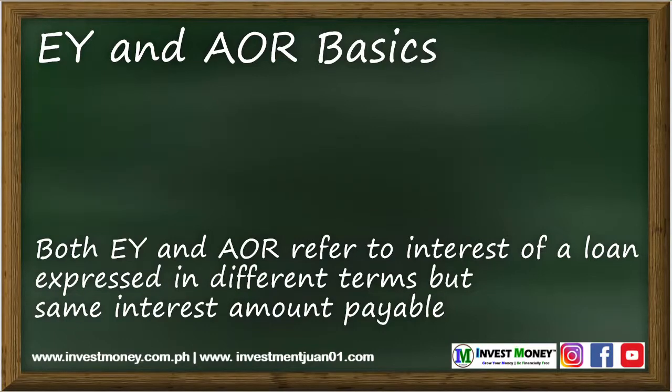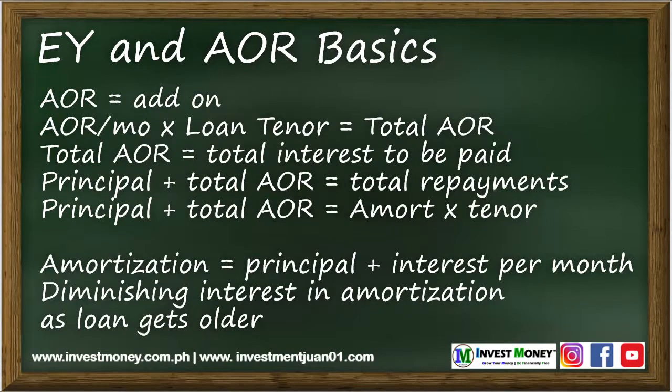Basically, AOR, by the name itself, is add-on. AOR multiplied by tenor is added to the principal loan amount, and this is the total amount of payables for the duration of the loan. The sum can be divided into monthly portions. Recall that in a term loan, every monthly payment — we call amortization — is split into principal plus interest. In the Philippines, the interest portion generally diminishes as the loan becomes older. Nonetheless, the total interest paid comes out as AOR multiplied by tenor.